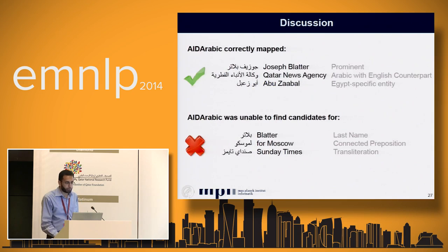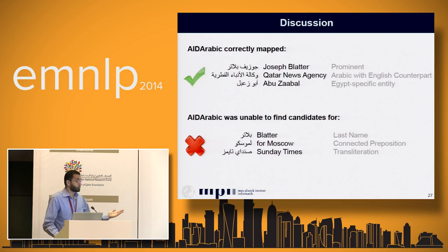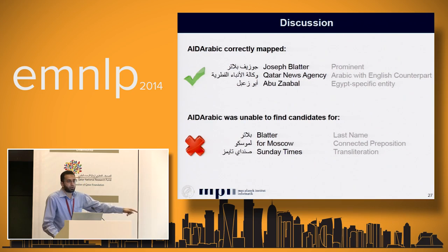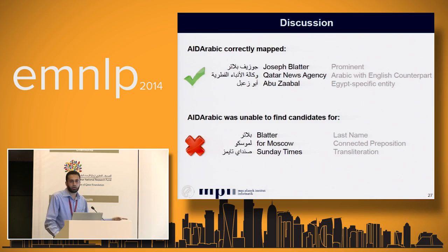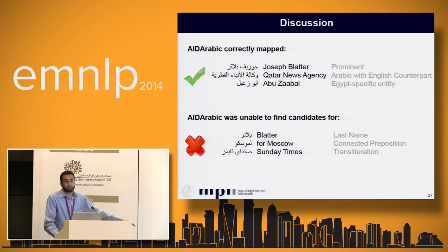Around 70 were assigned to null and one was wrongly mapped. To give a sense of performance: Joseph Blatter was mapped correctly — it's a prominent entity. Qatar News Agency was also mapped correctly. Abu Za'bal, a very region-specific entity, was also mapped correctly, confirming our entity repository covers what we wanted. However, problems remain: 'Blatter' alone (just the last name) could not be mapped because in the Arabic dictionary we don't have the last-name-only variant. Also, 'Le Moscou' — the connected preposition form — caused the system to fail to recognize it as the same candidate as 'Moscow'. And 'Sunday Times' was in our entity repository but we don't have its Arabic name in the dictionary.